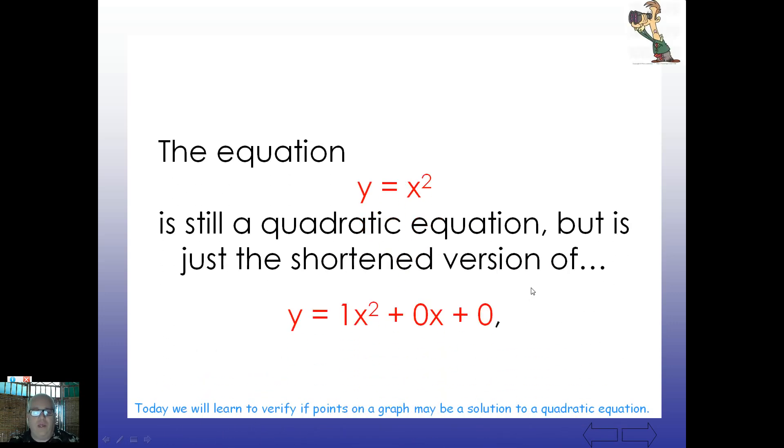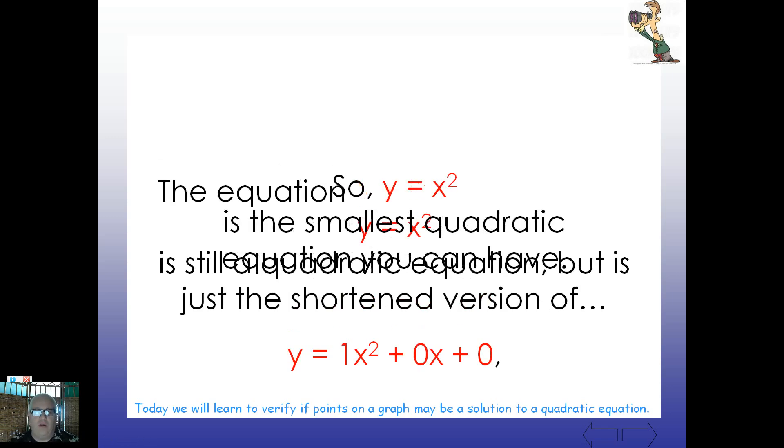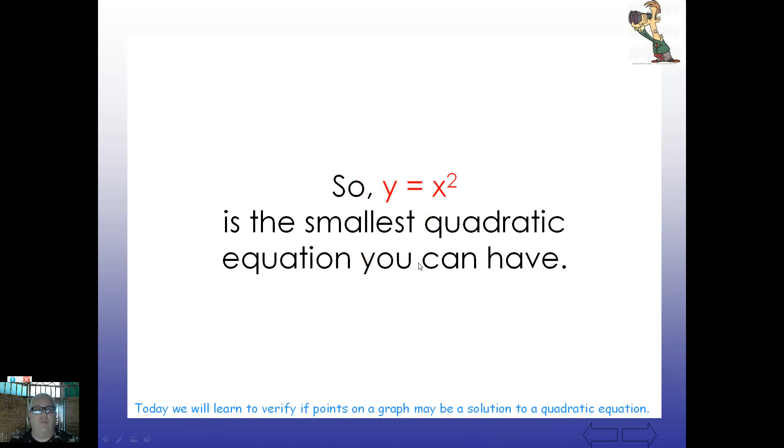Here's the equation y equals x squared. Now this even though it's a shorter version is still a quadratic equation. It's just the shortened version of what you see down below. One x squared plus zero x plus zero. If we have zeros of course as either coefficients or constants we just leave them off. So y equals x squared is the smallest quadratic equation you can actually have. Just so you might see that it's still a quadratic equation.